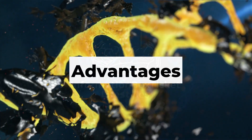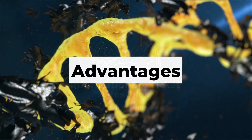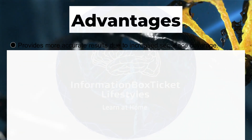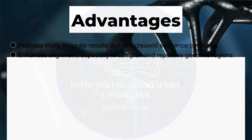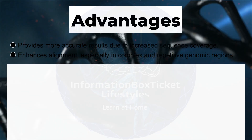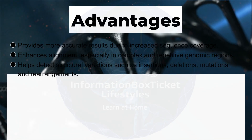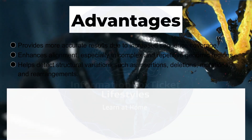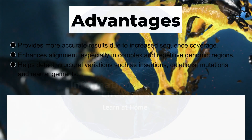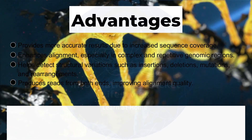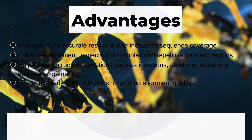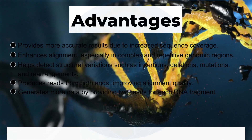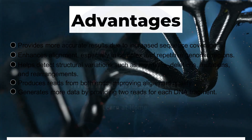Advantages of paired-end sequencing: it provides more accurate results due to increased sequence coverage and enhances alignment, especially in complex and repetitive genomic regions. It helps detect structural variations such as insertions, deletions, mutations, and rearrangements. It produces reads from both ends, improving alignment quality, and generates more data by providing two reads for each DNA fragment.